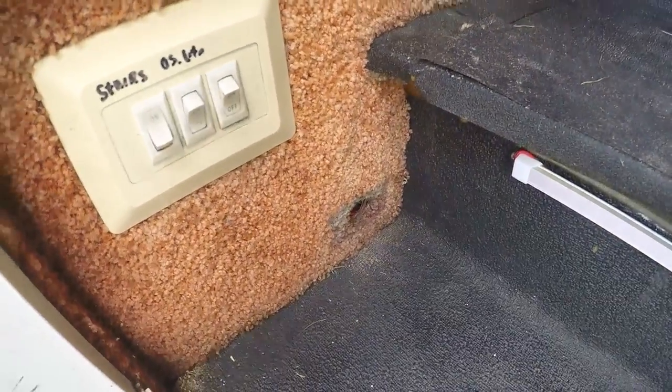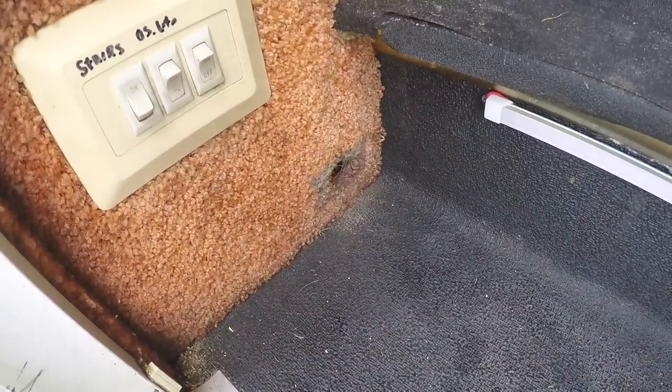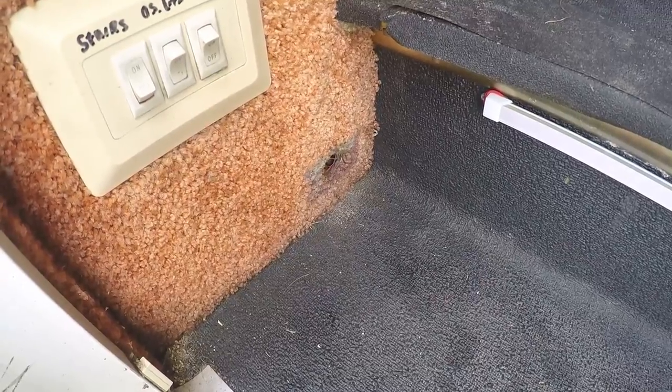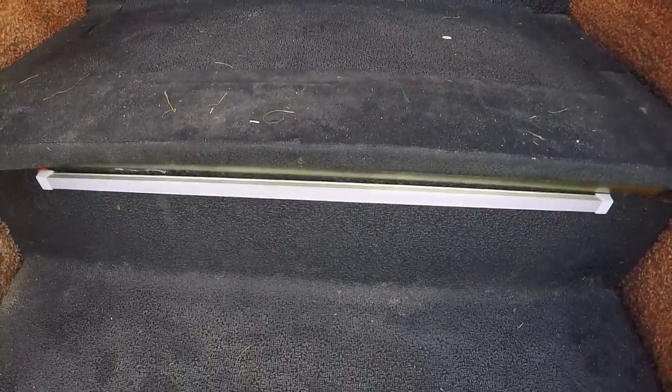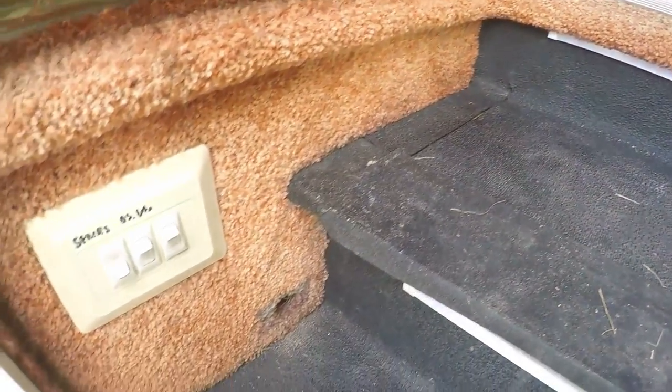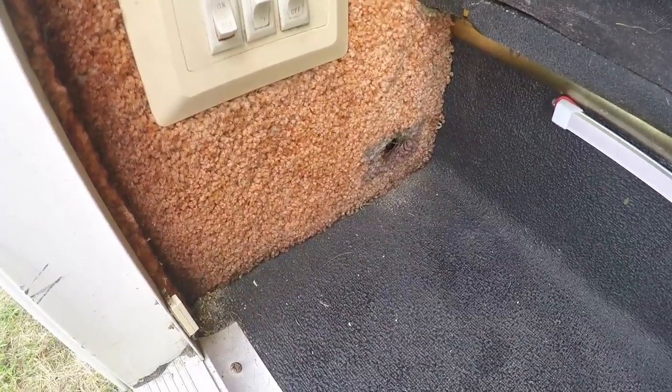The original little light was down here and it was really kind of worthless so I removed that and used the power from the wires that were there to power these. I just ran the wire behind the stairs. Your application may be very different so you're just gonna have to figure out how you want to run the lights. Then I ran it behind the carpet.